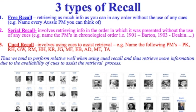The second type is serial recall. This time we're asking people to retrieve information from their LTM and put it back into the STM in some type of serial order. We can do that chronologically with the Prime Ministers by asking people to go back to 1901 and name Australia's first Prime Minister Edmund Barton, the second Alfred Deakin, and so on.